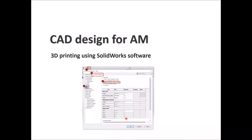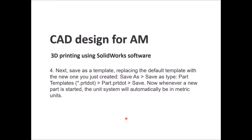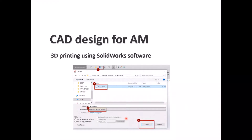Then hit OK. Next, you will save this as a template by replacing the default template with the new one, so that every time you open SOLIDWORKS it will already default to the metric unit system. To do that, go to the Save icon, save your template with the file name as a Part Template, then click Save. This way, you will have the unit system you chose as default on your machine.